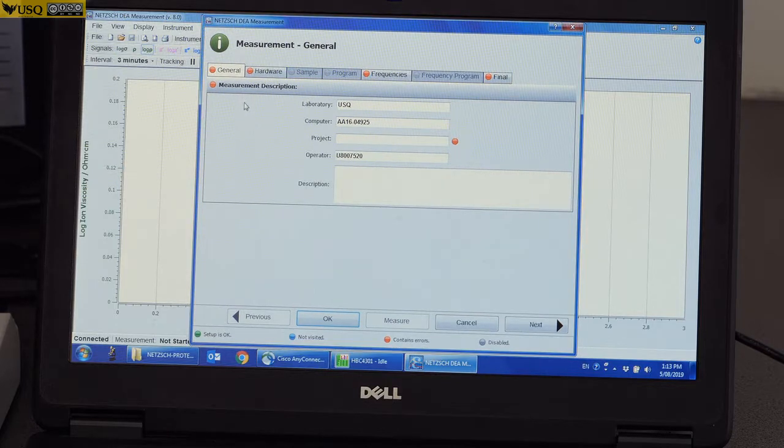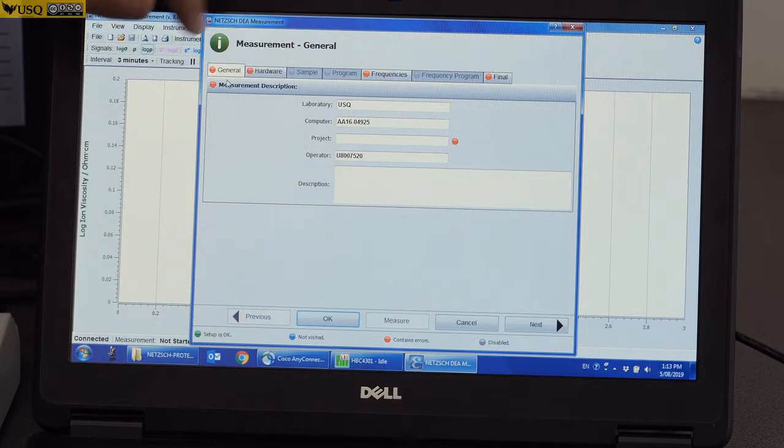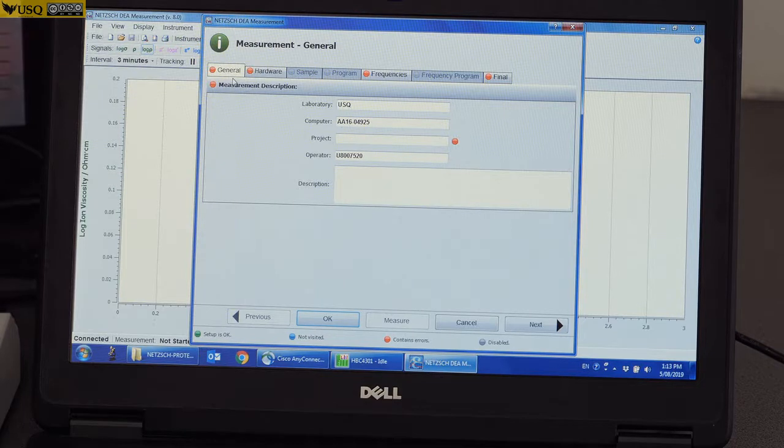If you look here, we have a field tab that is red. All this red must be filled before we can start a measurement.